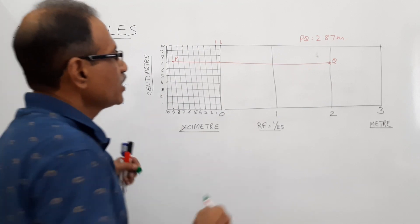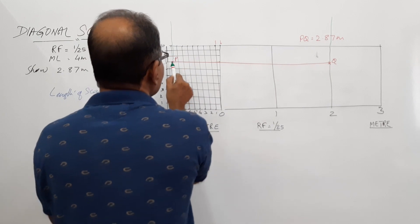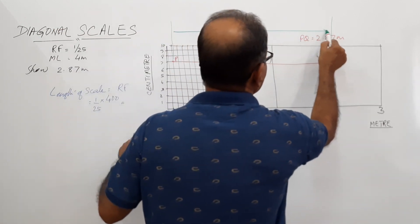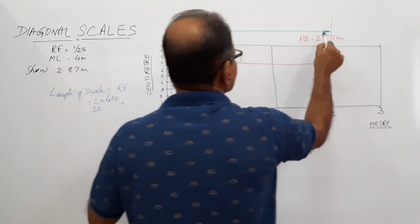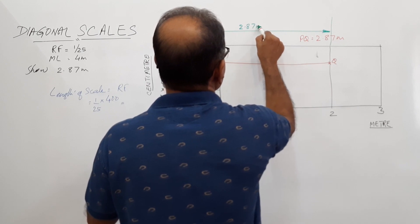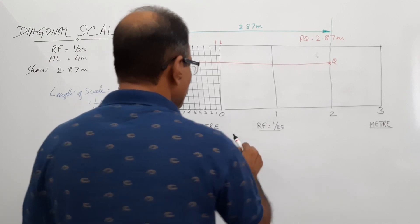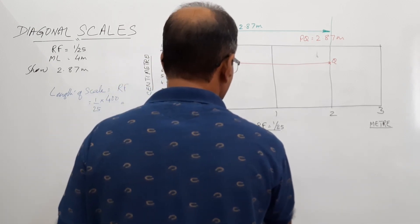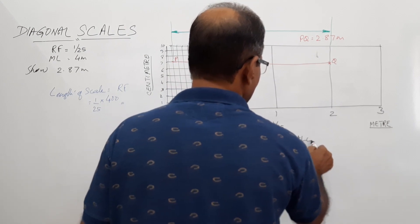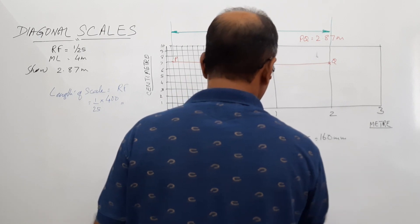Alternatively, draw a vertical line at Q and a vertical line at P, connect them by a dimensioning line, put arrowheads at both ends, and write 2.87 meters. At the bottom you can also print: Length of scale = 160 mm. You can underline it.